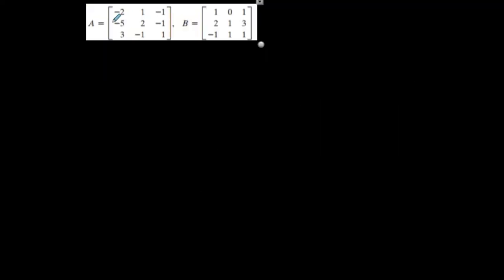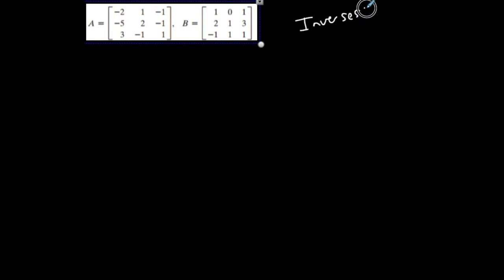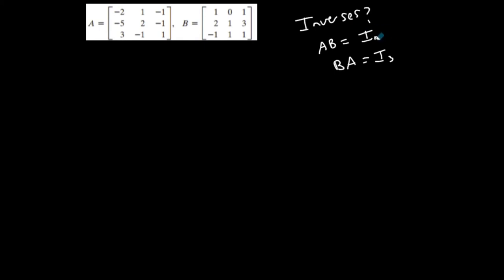Let's look at first determining if we have inverses. Are these two matrices inverses of each other? I would know if two numbers are multiplicative inverses if their product is one, so I'm going to check these two. If they are inverses, then AB should be the identity matrix and BA should also be the identity matrix — specifically I₃ since they're 3×3. It has to work in both directions.